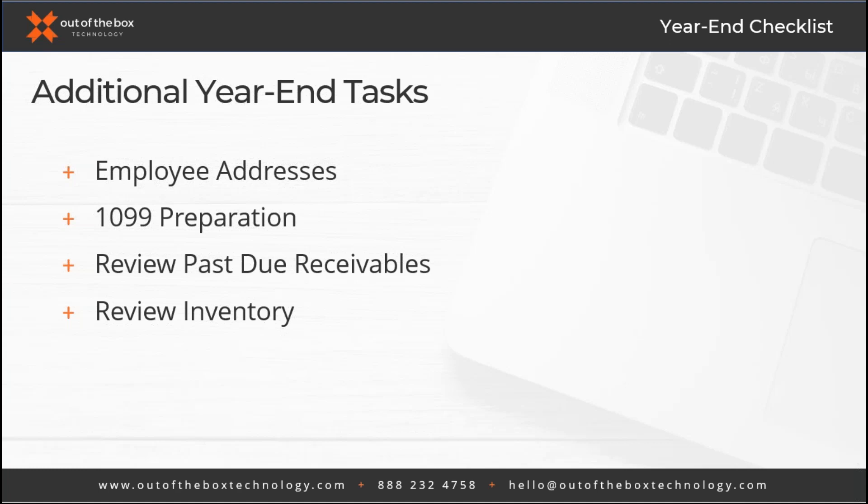At the end of the year you'll be really thankful you stayed on top of it. Doing it quarterly might take just a half hour to do a quick review of the vendor summary report and make sure you have all the W9s needed. That's my quick tip on 1099 prep — but as Jennifer said, we're here for you.